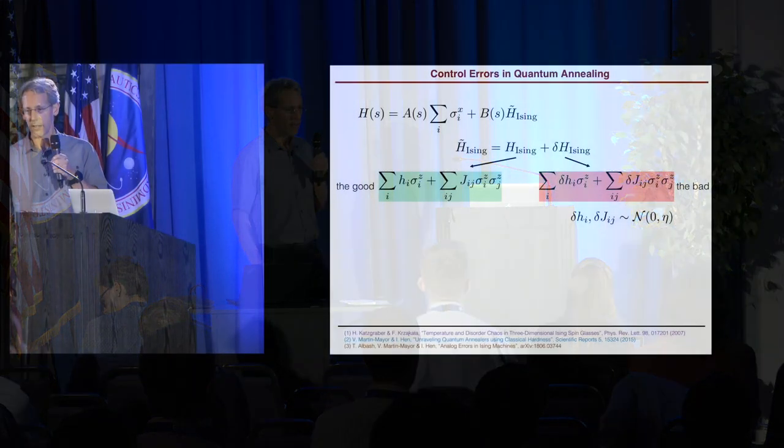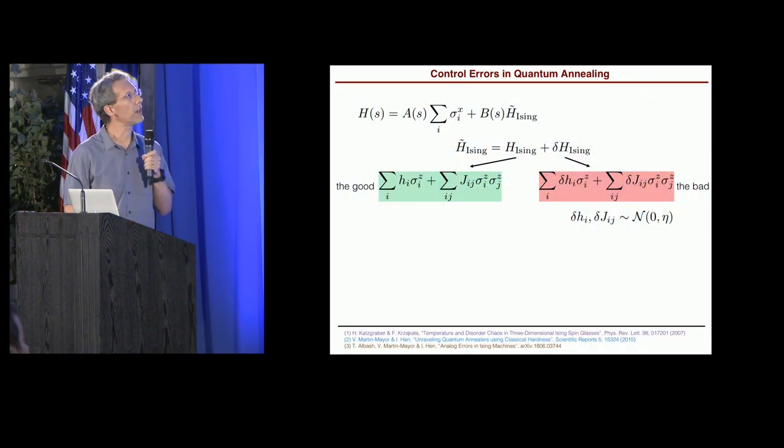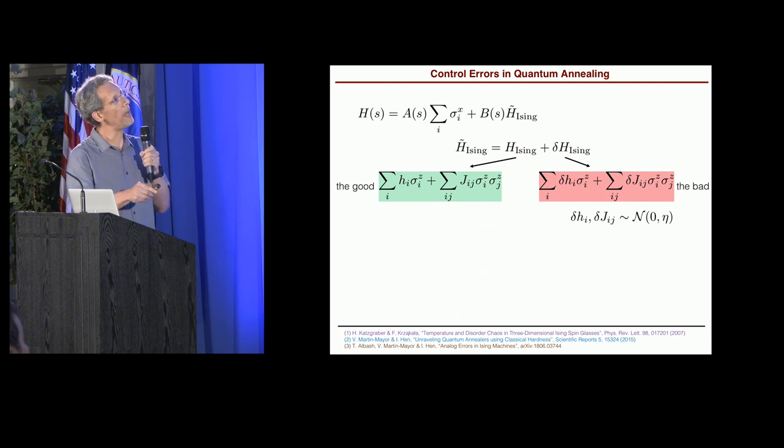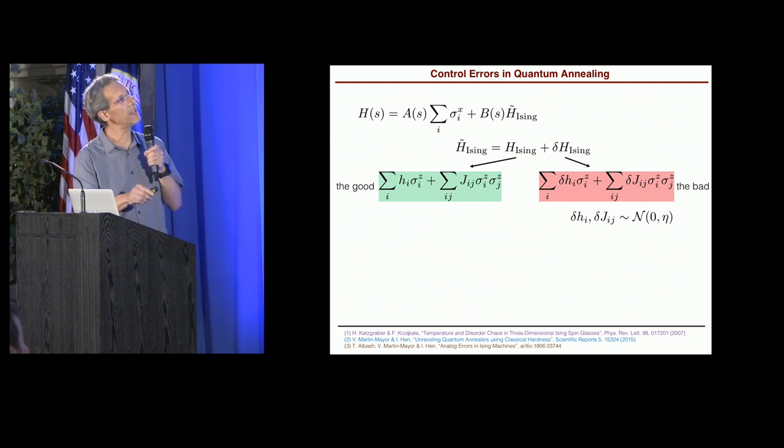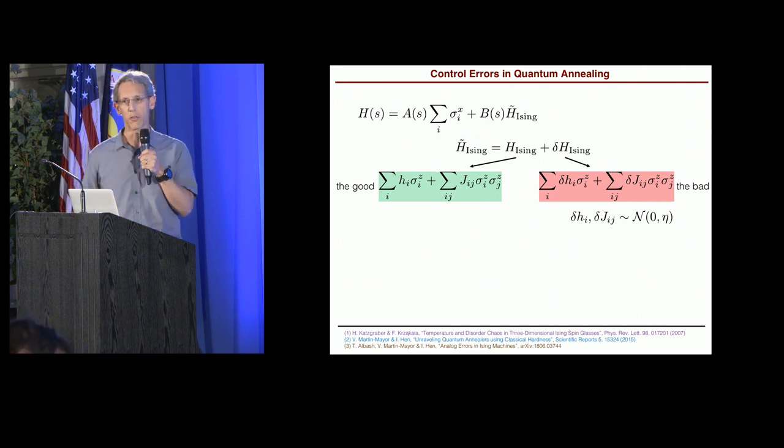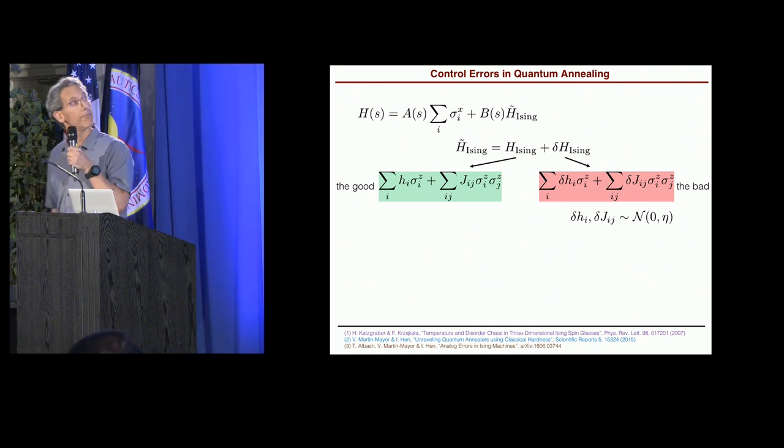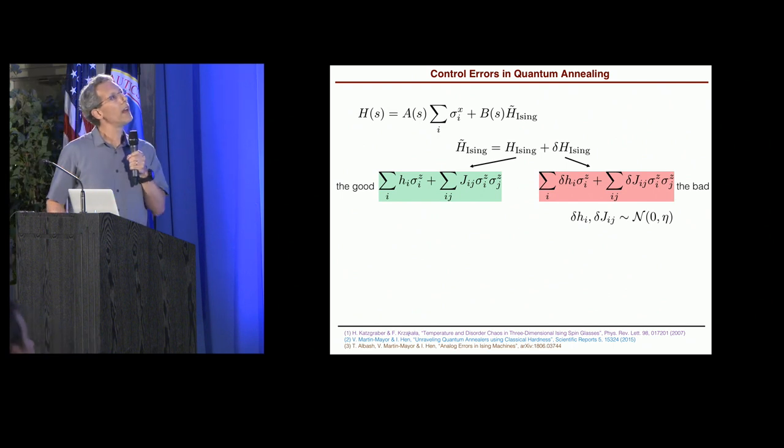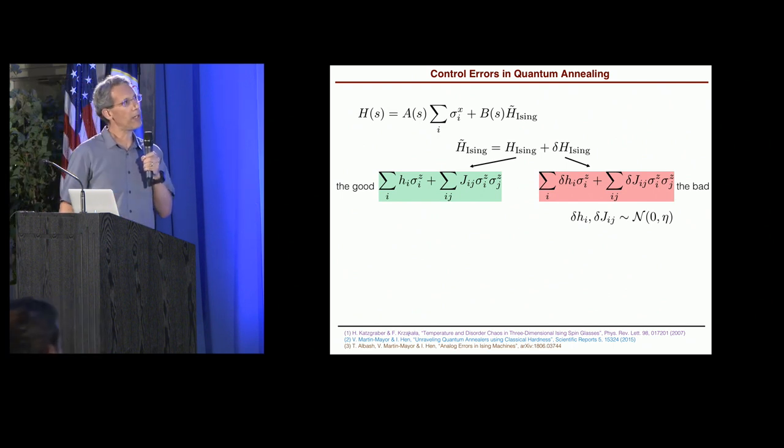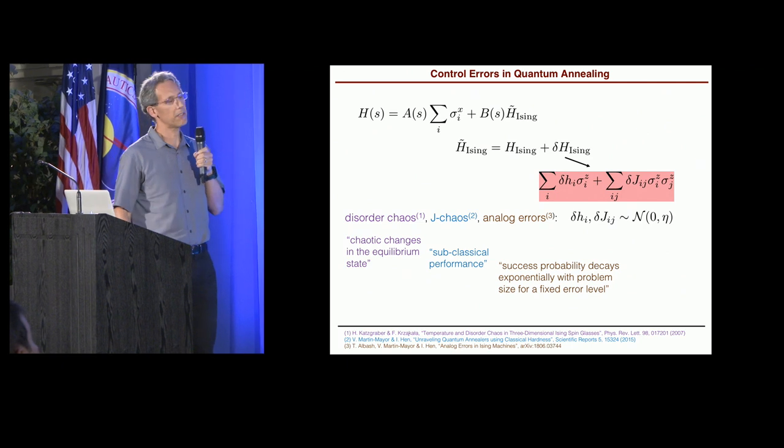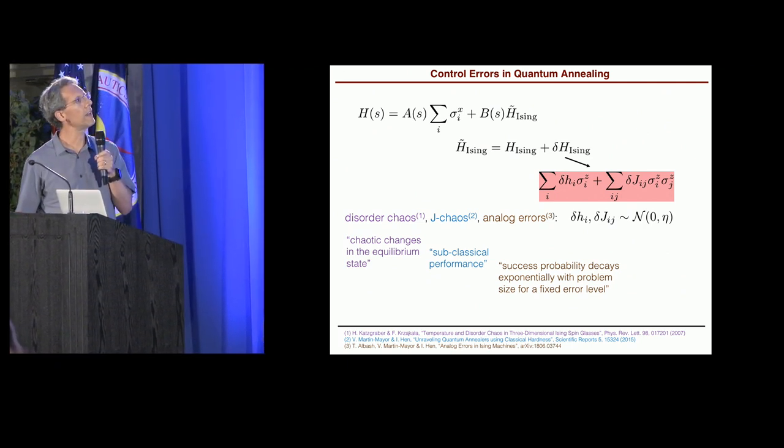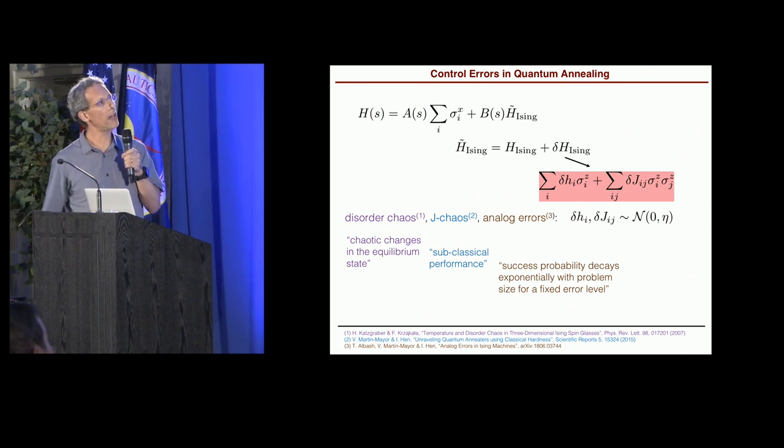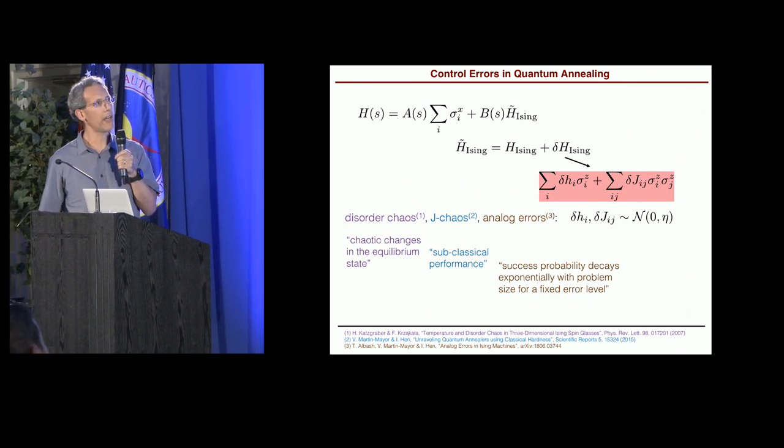Okay, so here is the Hamiltonian that you already saw. Ising Hamiltonian, it has two parts. It has the good and the bad. The good is what we want to implement. The bad has some Gaussian-distributed errors with standard deviation eta. Now, this bad part has been discussed by many people. This is a very incomplete list. It's sometimes called disorder chaos, J-chaos, analog errors.